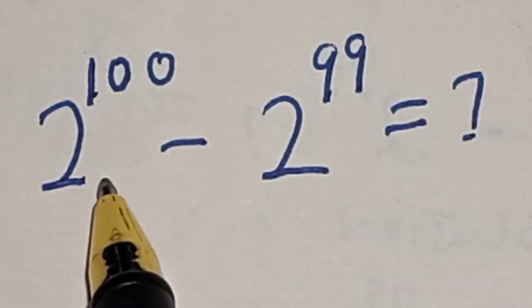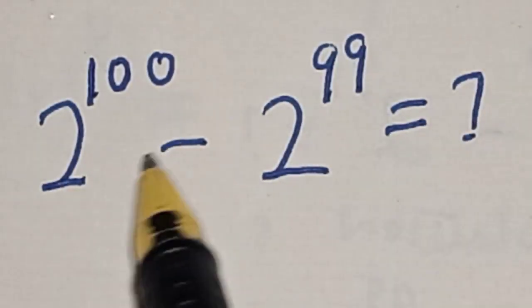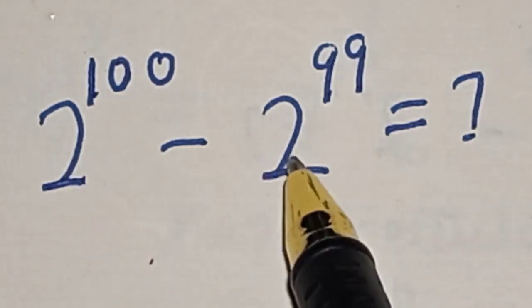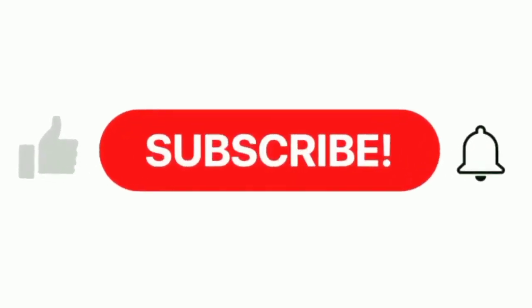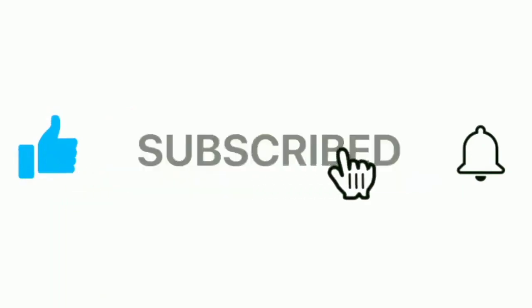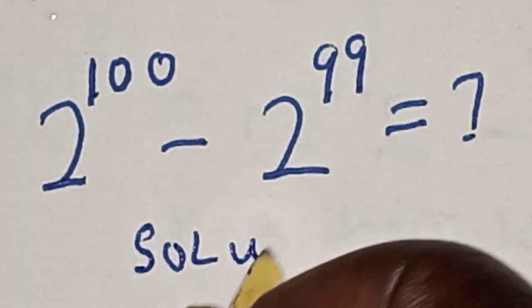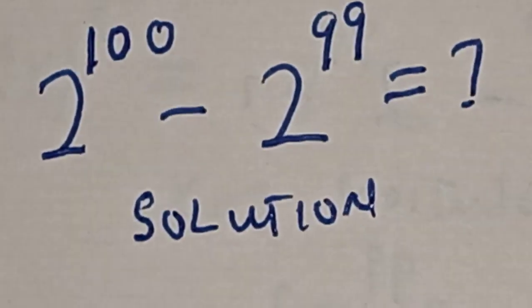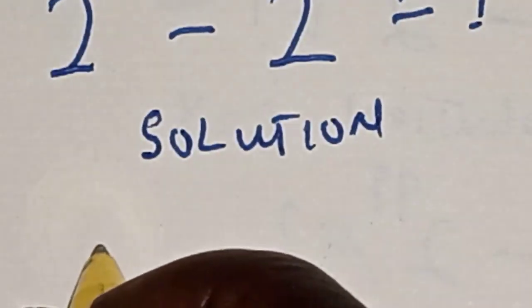Hello, welcome to Math Gist. In this class we want to evaluate this math problem: 2 raised to power 100 minus 2 raised to power 99 is equal to what? Like, share, comment and subscribe. The given equation is: